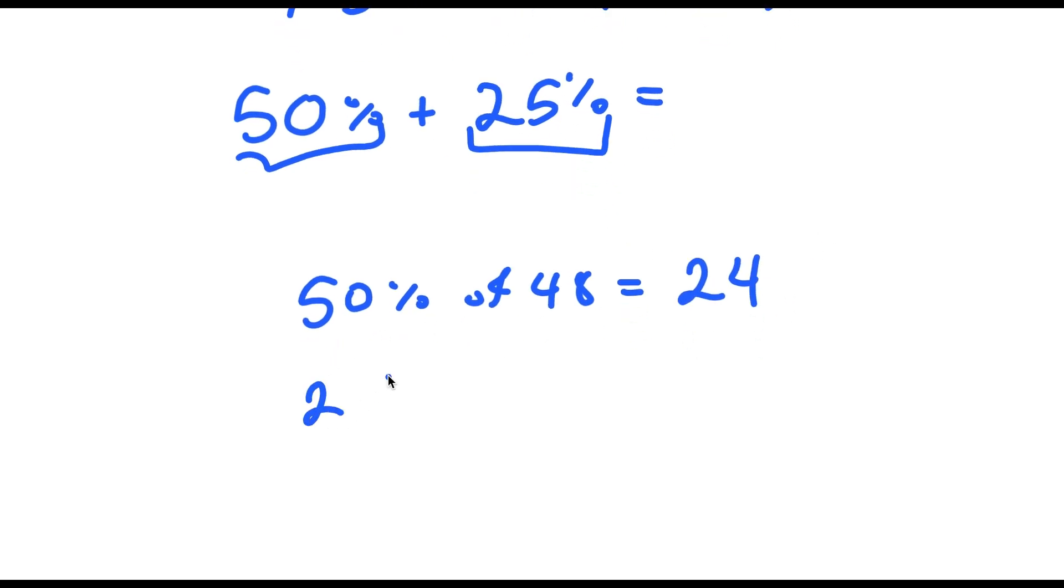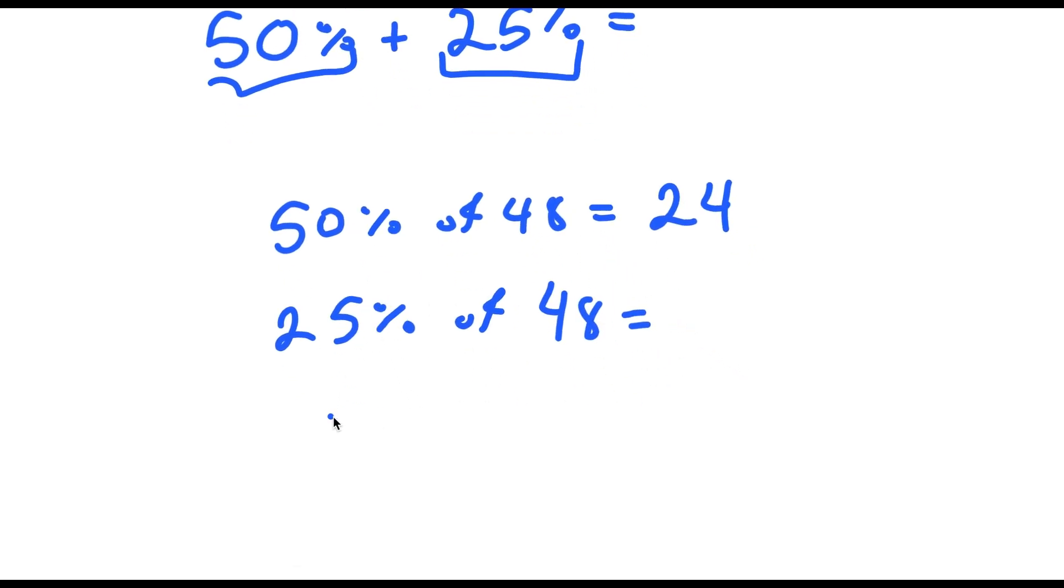And now 25% of 48. I actually made a video on this, how to easily find 25% of a number, but you just divide that number by 4 because 25% is the same thing as 25 over 100, which is 1 over 4. So this is me multiplying 48 with 1 over 4, which is dividing it by 4. And 48 divided by 4 is 12.